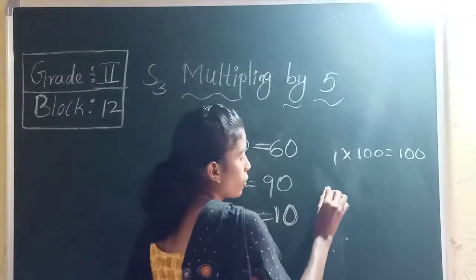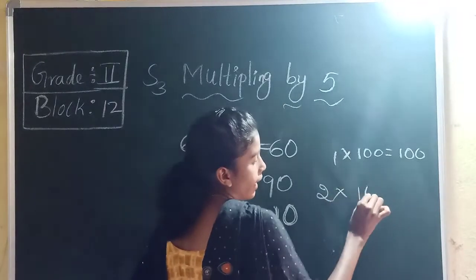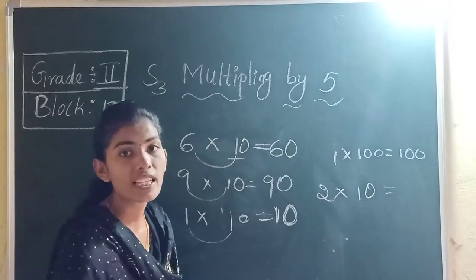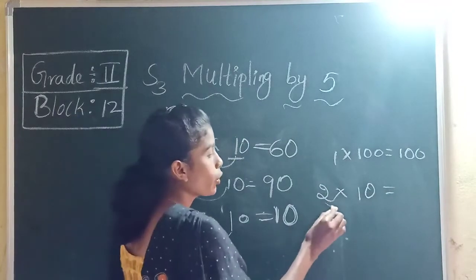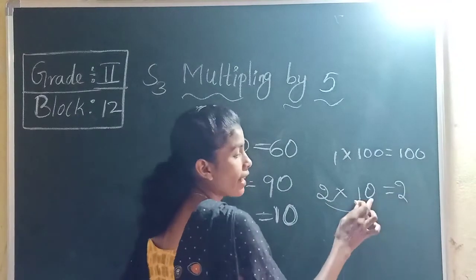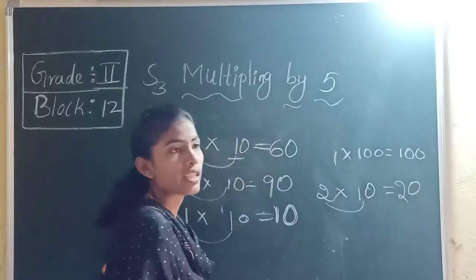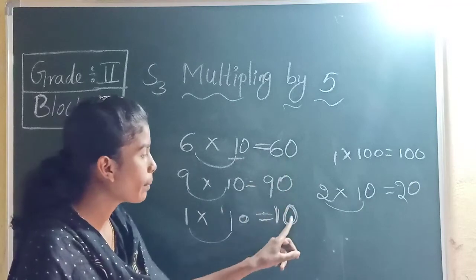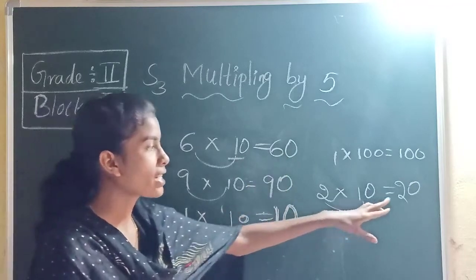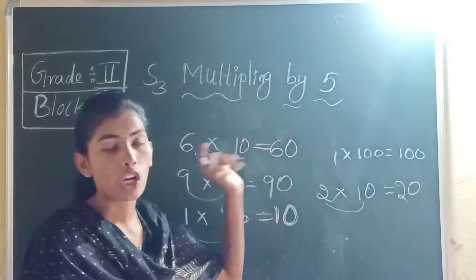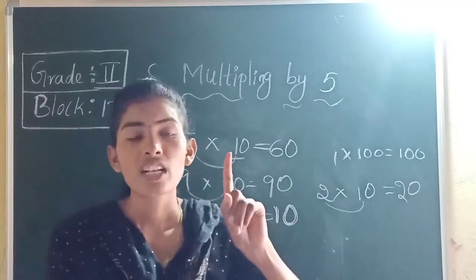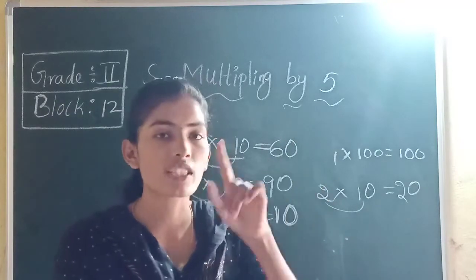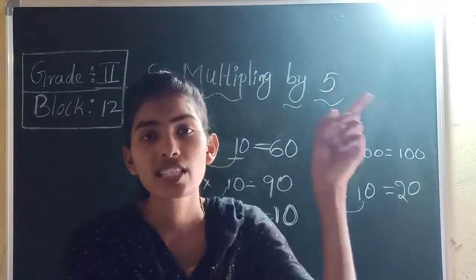Next, 2 into 10: multiply the non-zero numbers, 2 ones are 2, and add 0 because 10 has one zero, so the answer is 20. Every time you multiply any number with 10, the answer ends with 0. If you multiply a number with 1, the answer is always itself. If you multiply a number with 0, the answer is always 0.